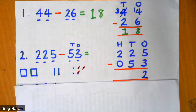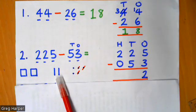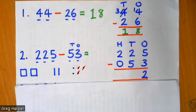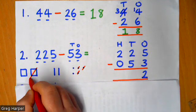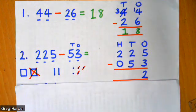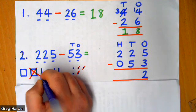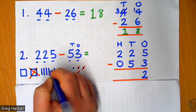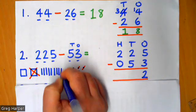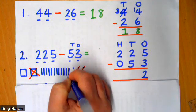Now, the tricky bit comes when I have two tens, but I need to take away five tens, which I can't do. So again, I'm going to exchange. But this time, I'm going to draw my exchange, rather than using my physical resources. So I'm going to cross out one of my 100 squares. And I'm going to exchange that for 10 lots of 10 because I know 10 tens are equal to 100. So I'm going to add in 10 more ten sticks. One, two, three, four, five, six, seven, eight, nine, ten.